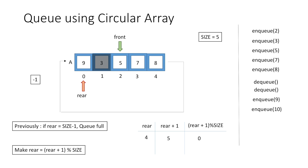Enqueuing another element 10: rear is now 0, so rear + 1 = 1, and 1 modulo 5 = 1. Therefore rear moves to index 1 and we insert value 10 there. So overall, the only change is that instead of just incrementing rear by 1, we now increment rear by 1 and take its modulo with the size of the array, so that after the last index, rear comes back to index 0.